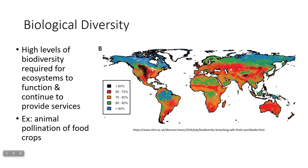One example is animal pollination of food crops. We get billions of dollars worth of free pollination services from various animals — insects, bees, and not just honeybees, but lots of species of wild bees that also pollinate food crops for us. However, if you've heard of colony collapse disorder, there's a lot of risk of loss of these bee species, which could compromise our ability to get our food pollinated, which could lead to food shortages.